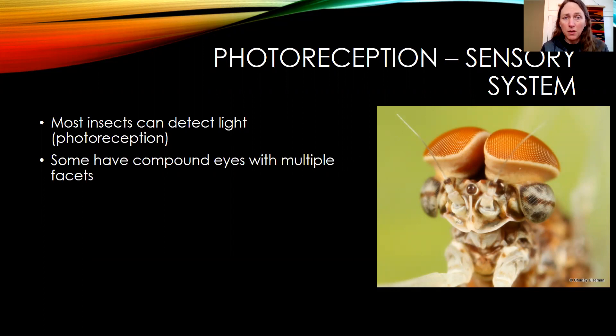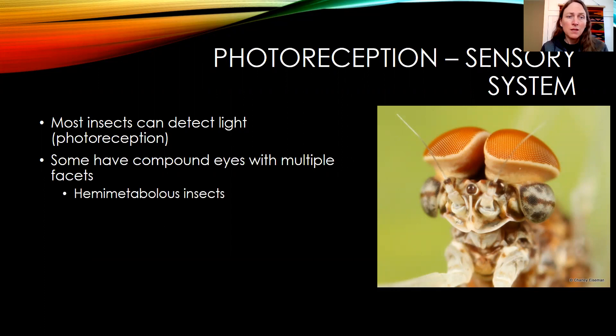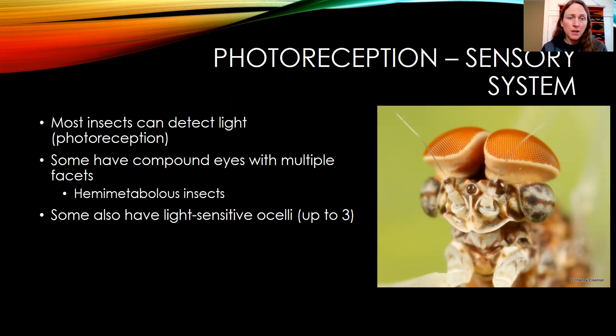Some have compound eyes with multiple facets, like you can see in this picture of a mayfly male. The hemimetabolous insects will have compound eyes.